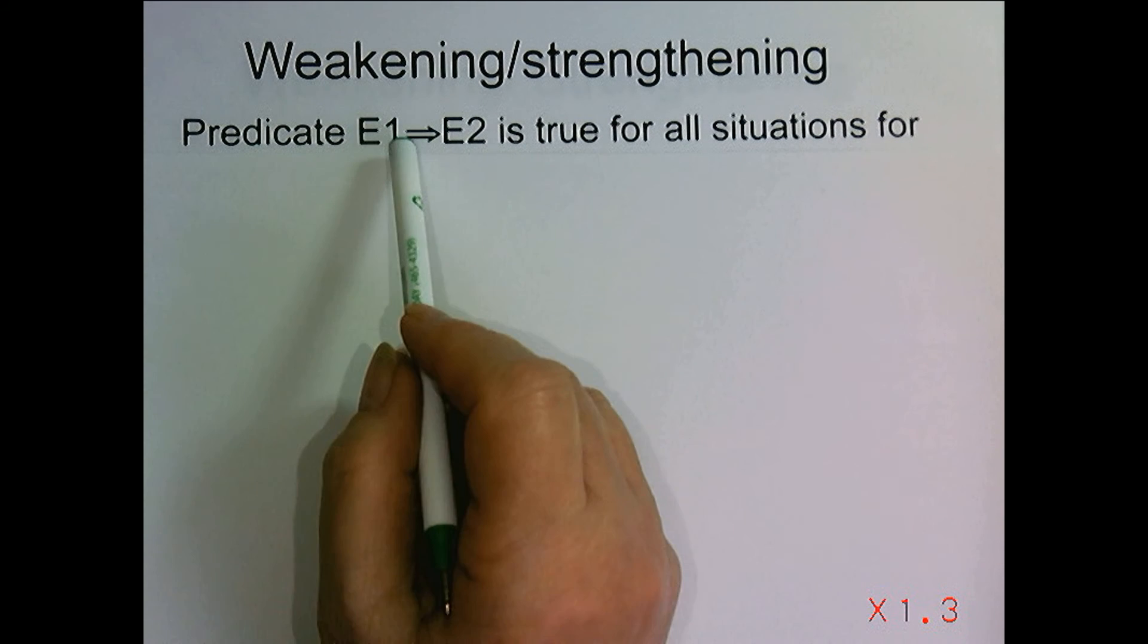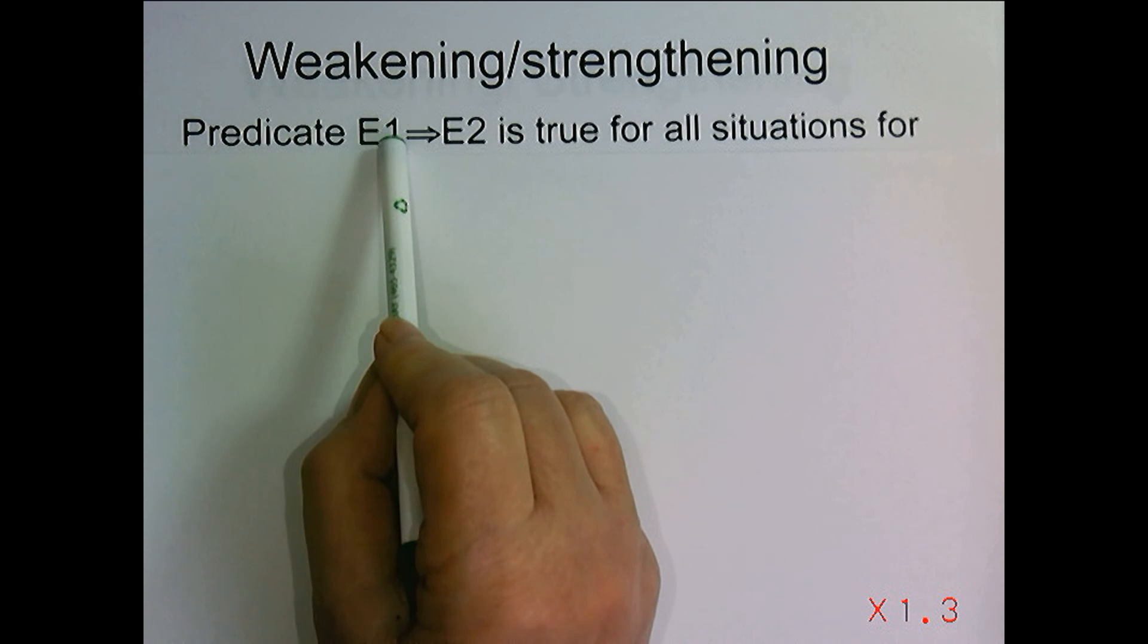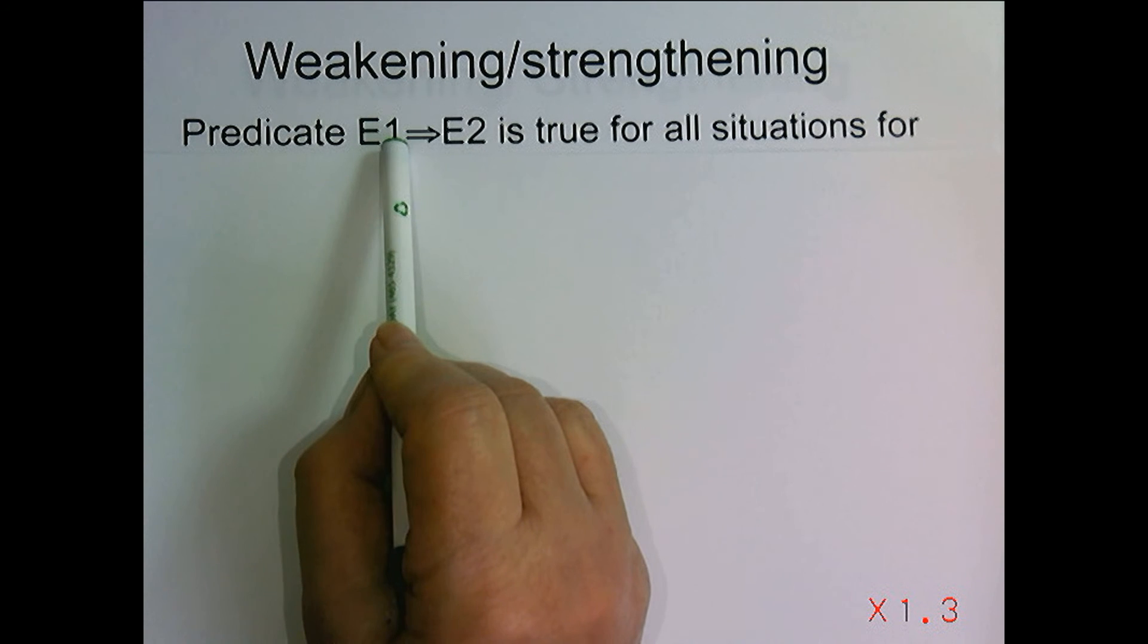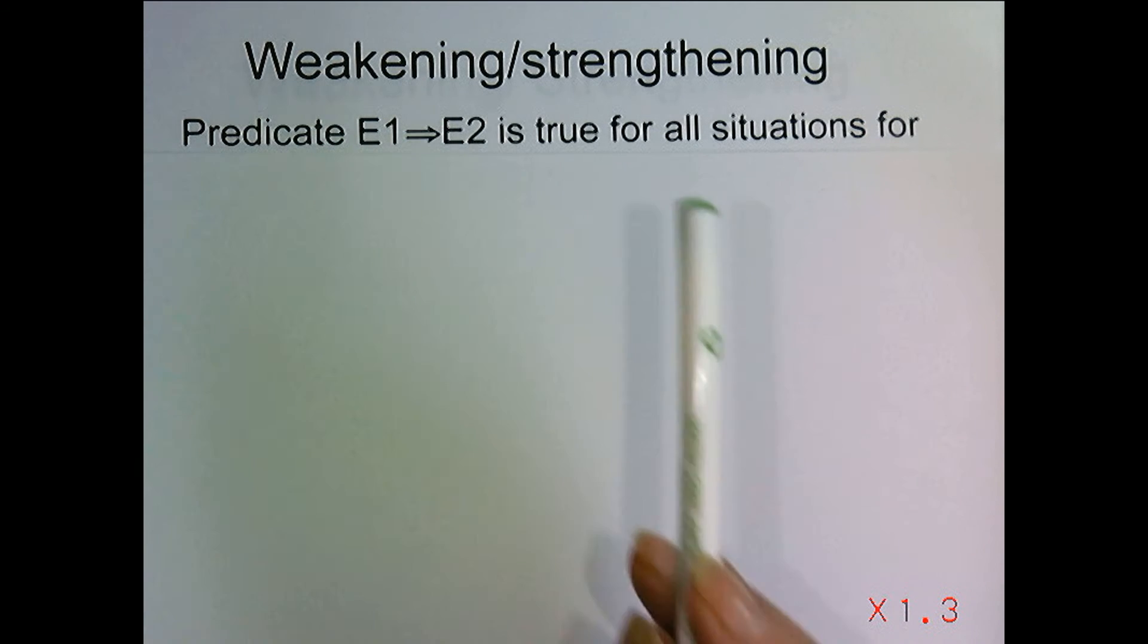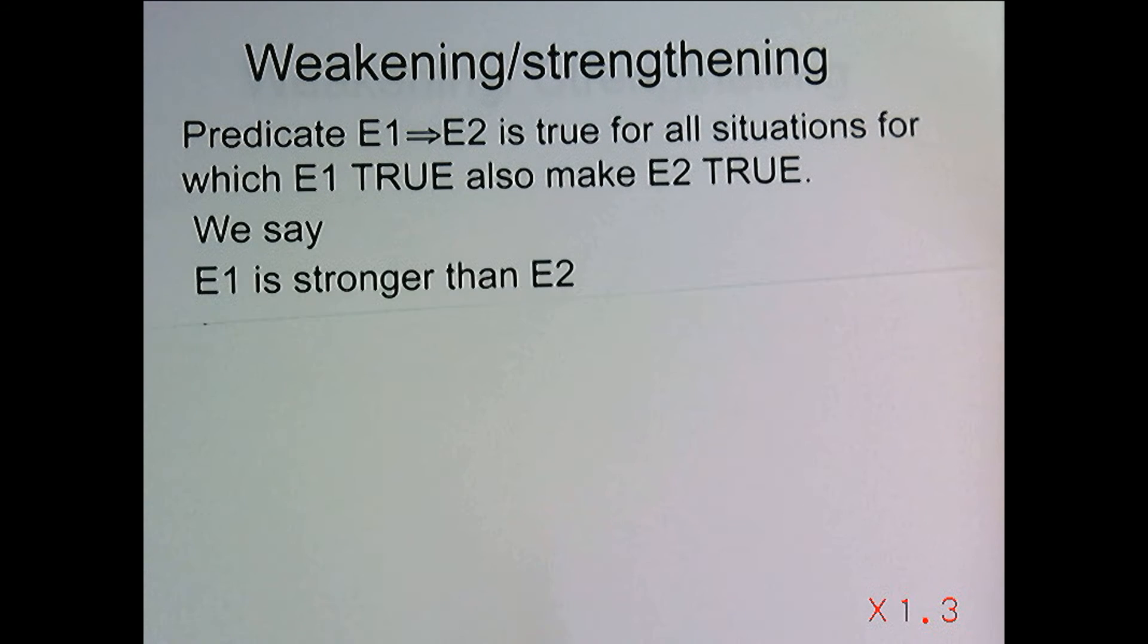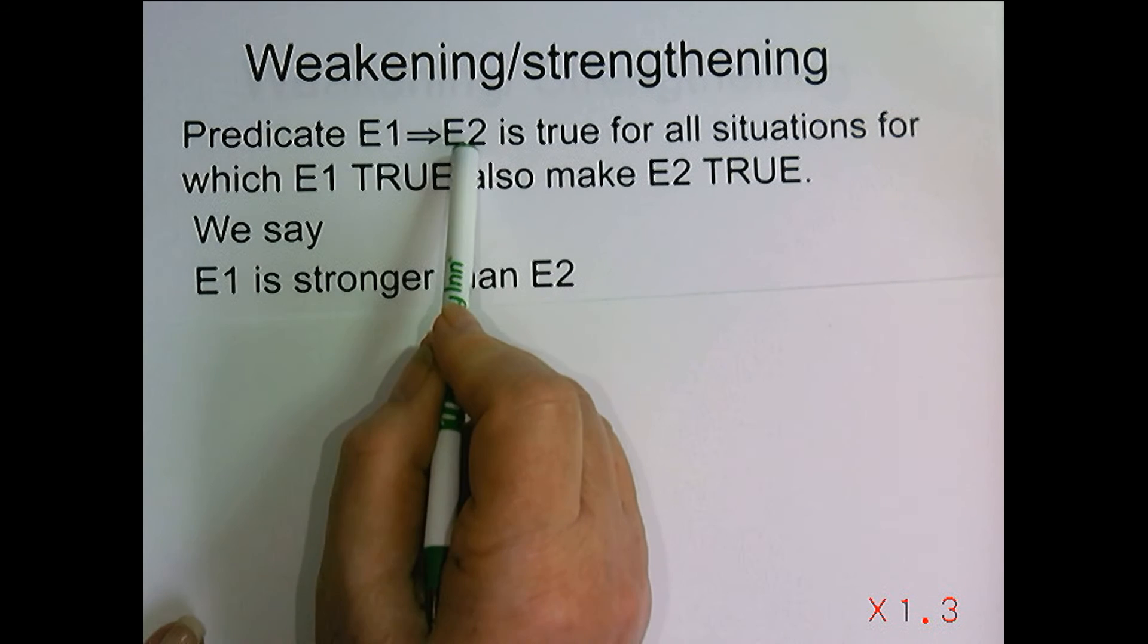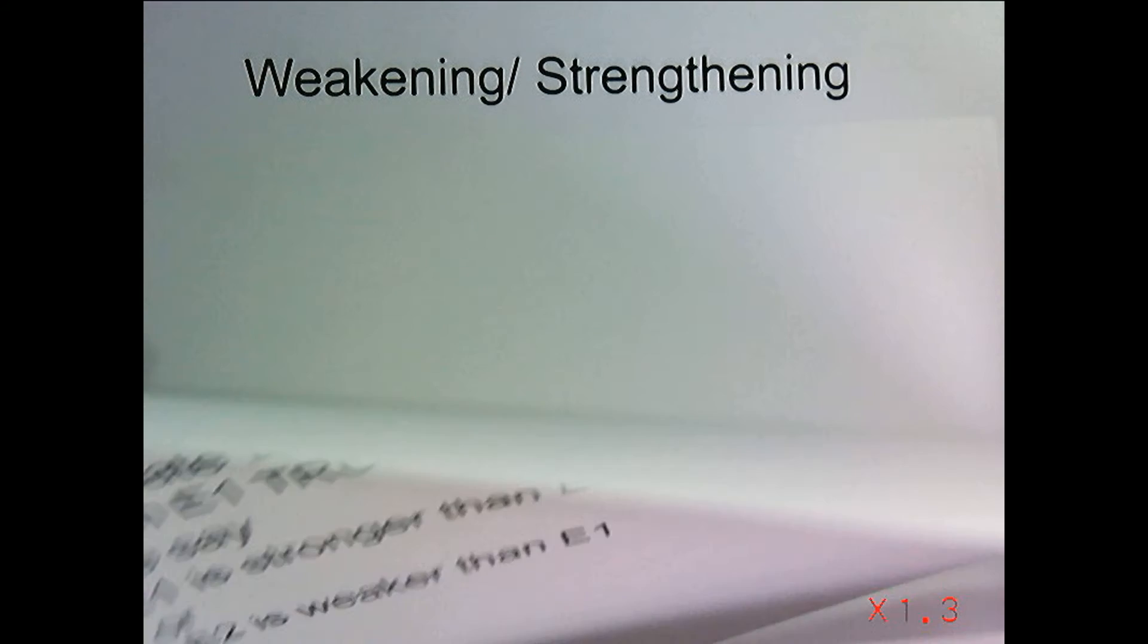In many situations we have predicates involving implications, and if the implication is true, that means every situation that makes E1 true has to also make E2 true. So if E1 is a predicate involving variables, any value that variable takes on that makes E1 true also must make E2 true in order for this implication to be true. So we would say that E1 is stronger than E2 if the implication holds, or we say E2 is weaker than E1.